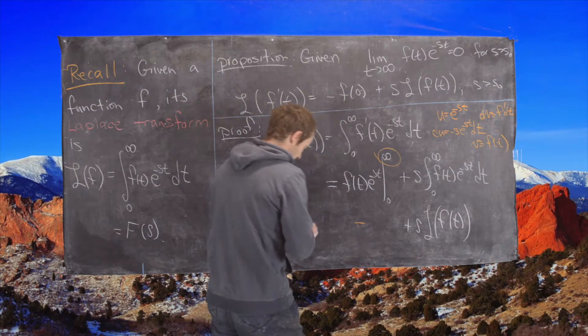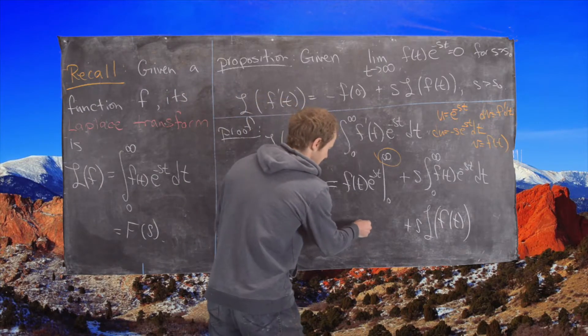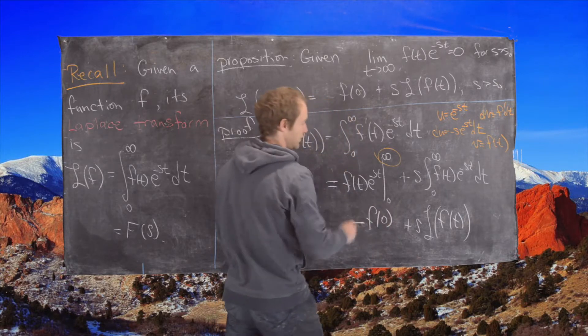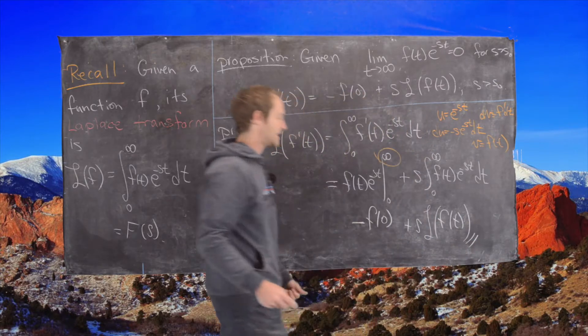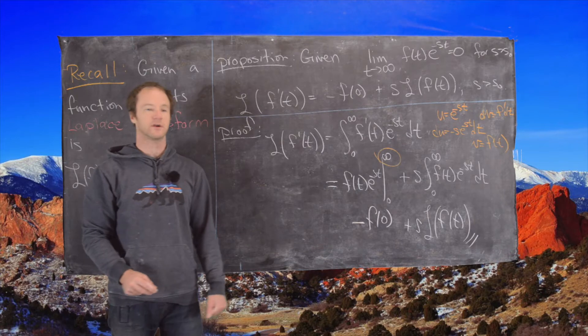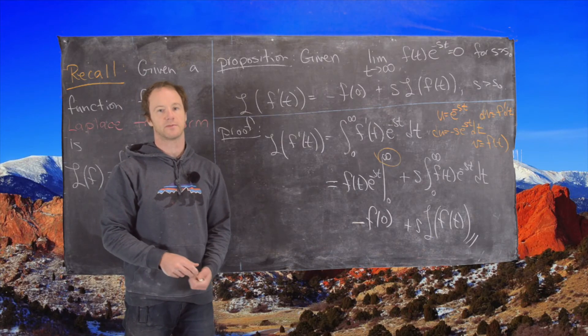So we have minus f(0) plus s times the Laplace transform of the original function, and that's the end of the proof of this proposition.